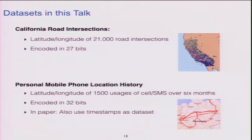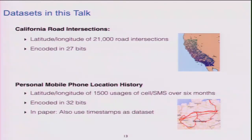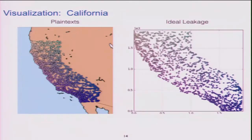For a less cartoonish set of experiments, we used two datasets. First, California road intersections: 21,000 latitude-longitude pairs of road intersections used to test ORE in prior work. The second was a personal mobile phone location history released by Malte Spitz, a politician in Germany who's a privacy activist and sued his phone company to get this data, then posted it online — which I would consider sensitive information.